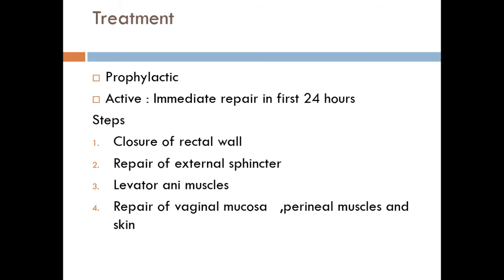The main important step is proper anatomical repair. First, we close the rectal mucosa, then identify the torn ends of the external anal sphincter and bring them together by suture in front of the rectal wall. Then we suture the levator ani muscle, which is the main pelvic support. After these steps, we confirm that the tone of the anal canal has returned by per rectum examination — asking the patient to squeeze the finger. Then we close the perineal mucosa, perineal muscle, and perineal skin.